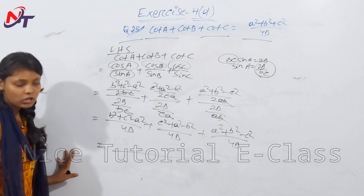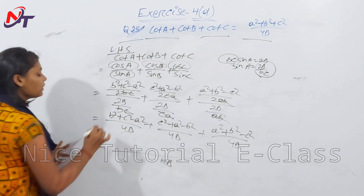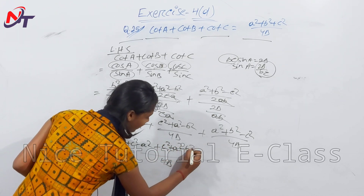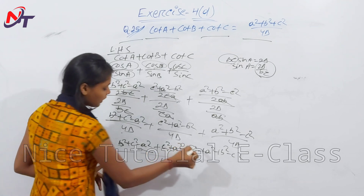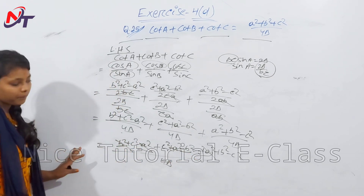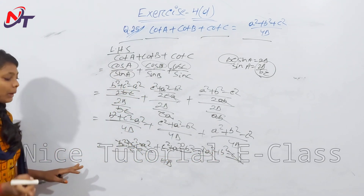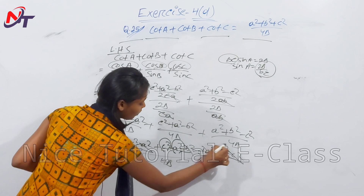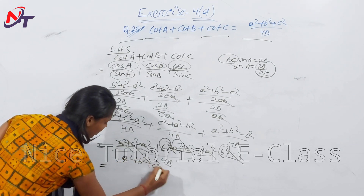Taking LCM = 4Δ and doing simple addition: (b² + c² - a²) + (c² + a² - b²) + (a² + b² - c²) all over 4Δ. The -a² and +a² cancel, -b² and +b² cancel, -c² and +c² cancel, leaving a² + b² + c² over 4Δ.